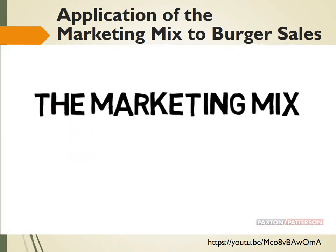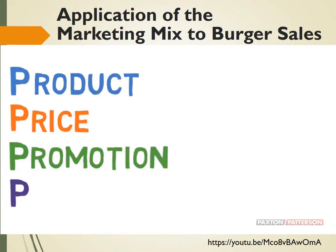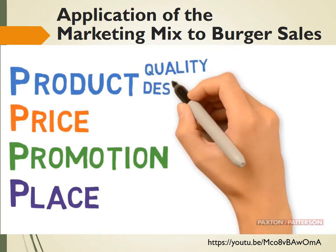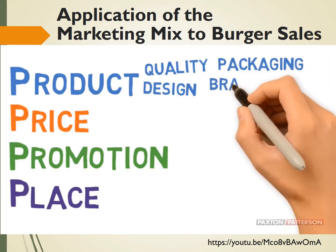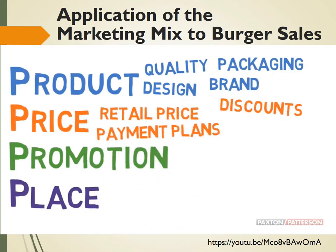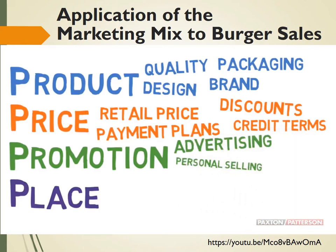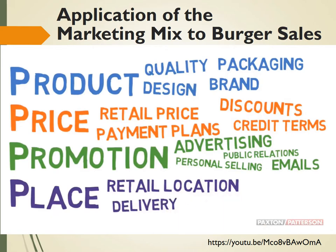The marketing mix is a combination of the 4Ps: product, price, promotion, and place. When we talk about product, we mean things like the quality of the product, the design, the packaging it's sold in, and the brand. Price not only refers to the retail price, but also any discounts, payment plans, and specific credit terms. Promotion deals with any advertising, personal selling, public relations, emails — anything that gets the word out. Place refers to whether you have a retail location or storefront, whether you deliver, or if the product can be downloaded — basically all distribution methods.